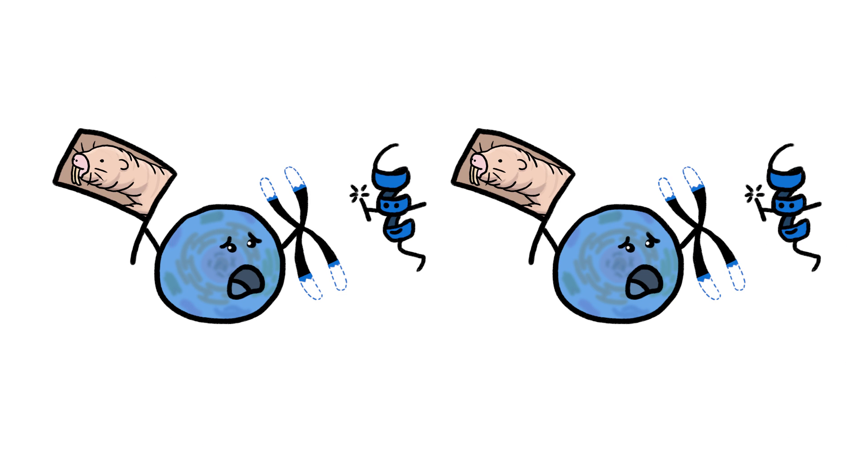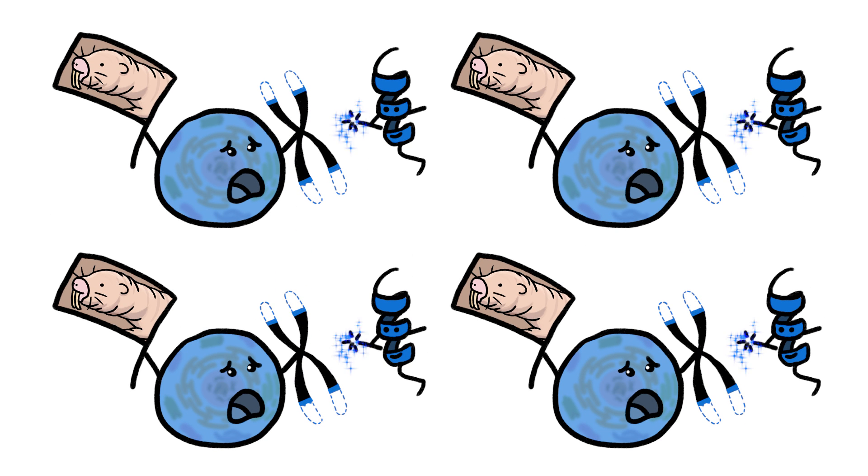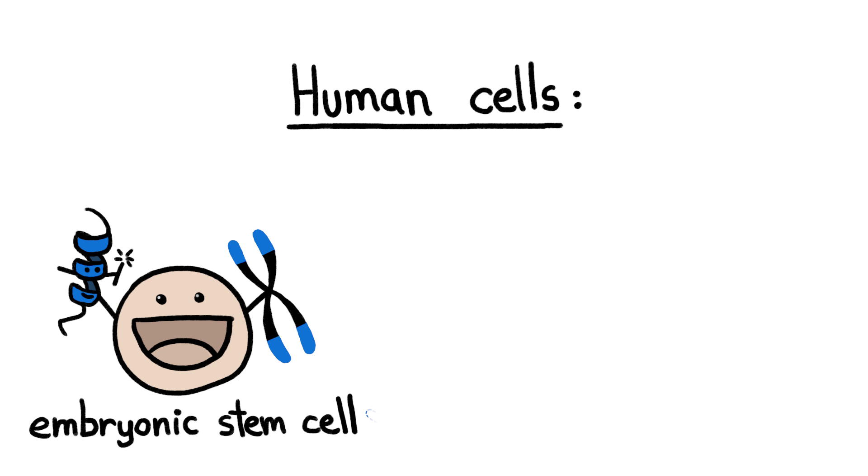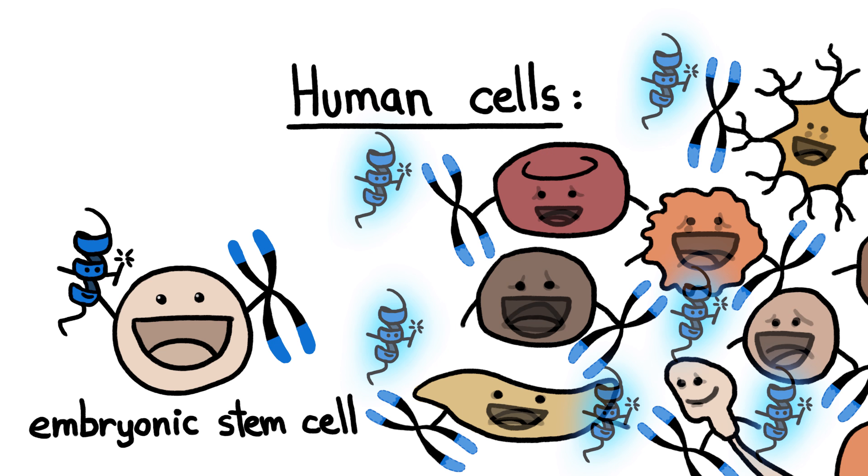Age-defying species like naked mole rats, however, pump out high levels of a telomere-rebuilding enzyme that enables them to keep on replacing old and dysfunctional cells indefinitely. A few kinds of human cells make this enzyme, but the vast majority don't. And even if we could trick the rest into producing it, then we'd have another problem.